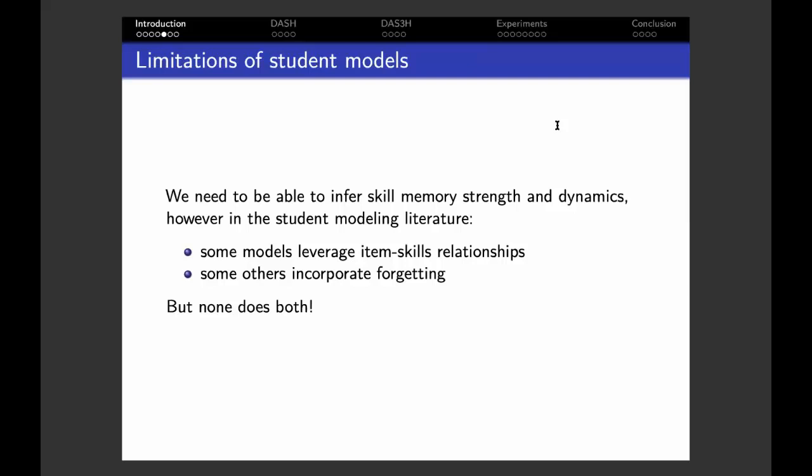For this purpose, we chose a model-based approach. We need a student predictive model that is able to infer skill current and future mastery level based on past student performance data. In particular, this model should be able to work with items that involve multiple skills at the same time. However, in the student modeling literature, some models leverage item-skill relationships, some other models incorporate forgetting effects within the model structure, but none does both.